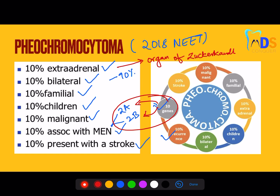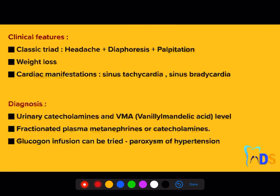Regarding the pathology associated with this tumor: whenever the adrenal gland increases in size, it is going to produce norepinephrine and epinephrine — more norepinephrine than epinephrine. Please make a note of this, as it can be asked in exams. The clinical features include a classic triad.